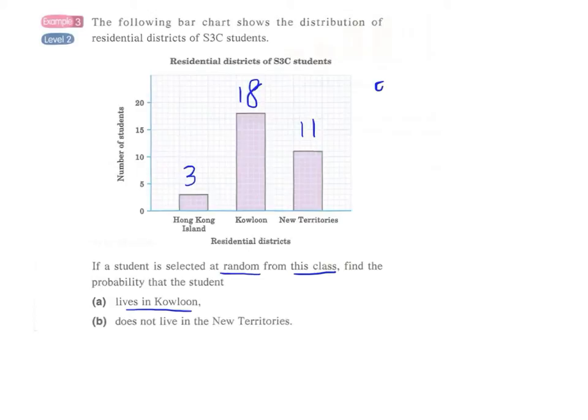So the answer for Part A will be: we have a total of 32 students—3 plus 18 plus 11, we have 32.